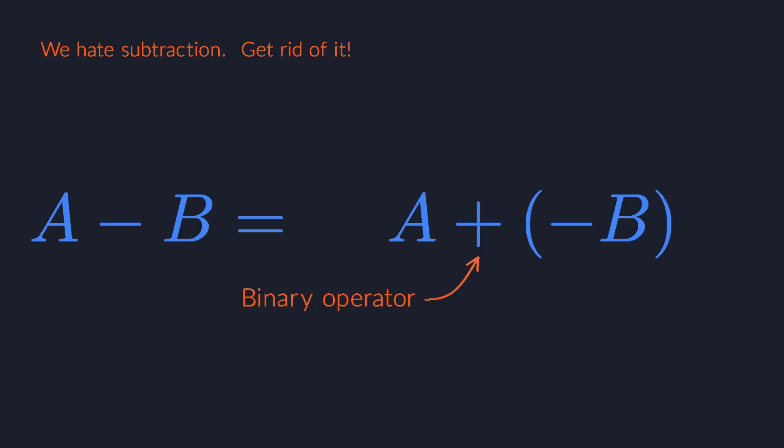One downside of going from binary minus to unary sign flip is that we need more parentheses. If you don't like that, here's a cool notational trick. You can put the minus sign on top of the number.